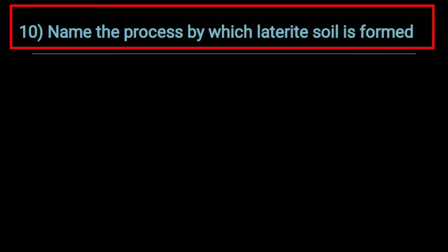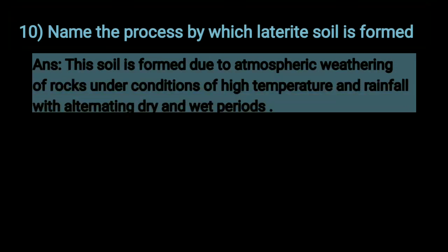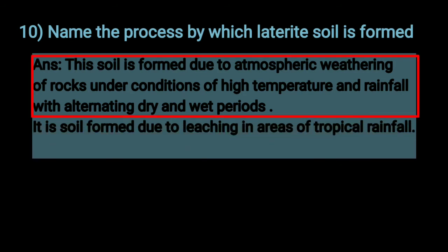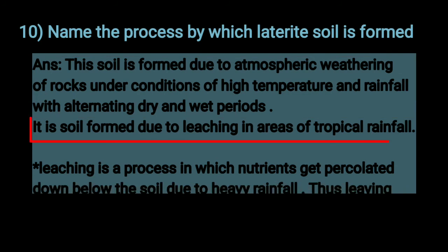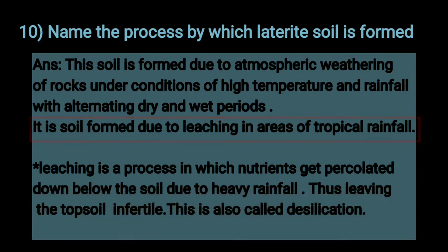Name the process by which laterite soil is formed. It is formed due to atmospheric weathering of rocks under conditions of high temperature and rainfall with alternating dry and wet periods. It is formed due to leaching in areas of tropical rainfall. Leaching is a process in which nutrients get percolated down below the soil due to heavy rainfall, leaving the topsoil infertile. This is also called desilication.